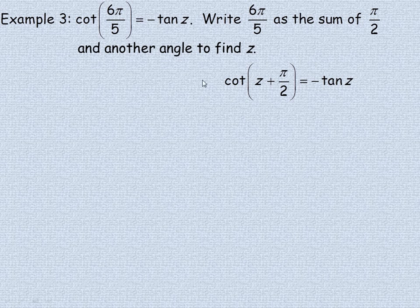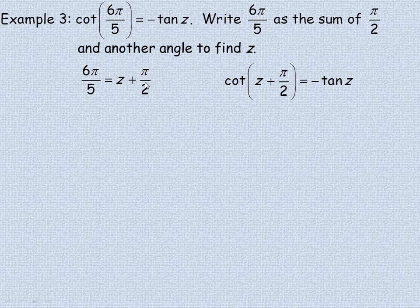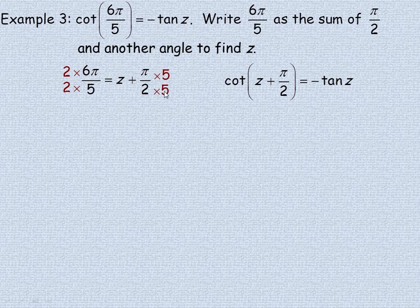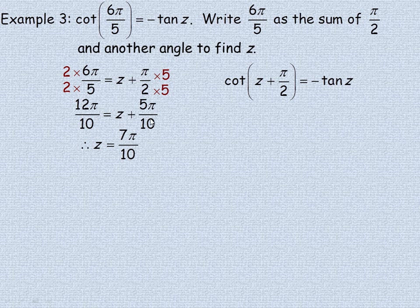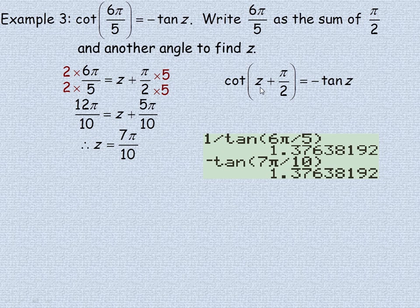The 6 pi over 5 is going to be broken down into some unknown angle z plus pi over 2. To find z, we take pi over 2 away from 6 pi over 5. The common denominator is 10, so we multiply accordingly: 12 pi over 10 minus 5 pi over 10 equals 7 pi over 10. So the unknown angle z equals 7 pi over 10.